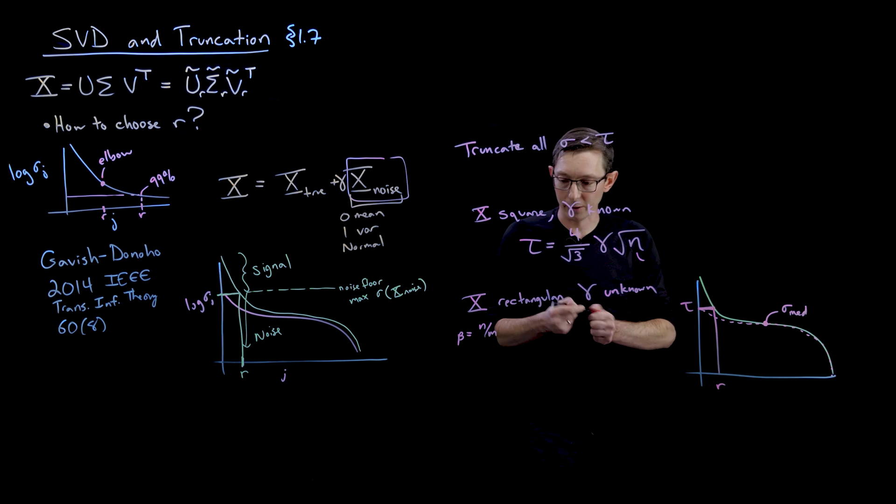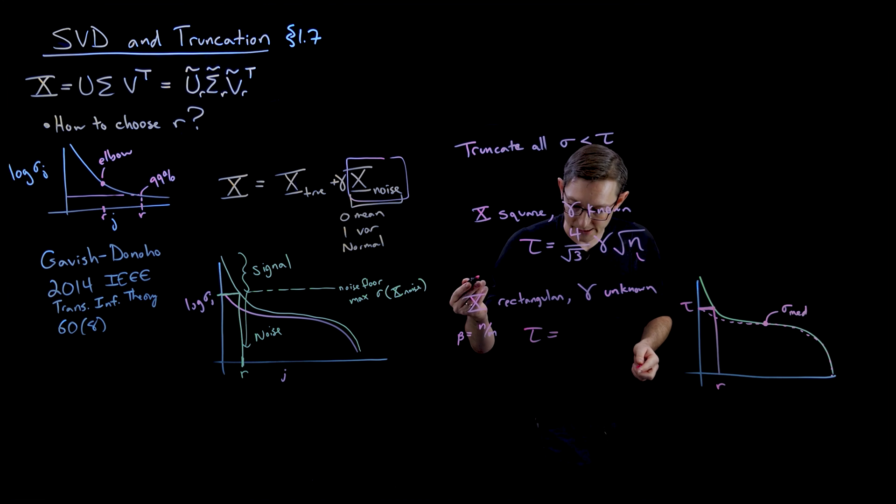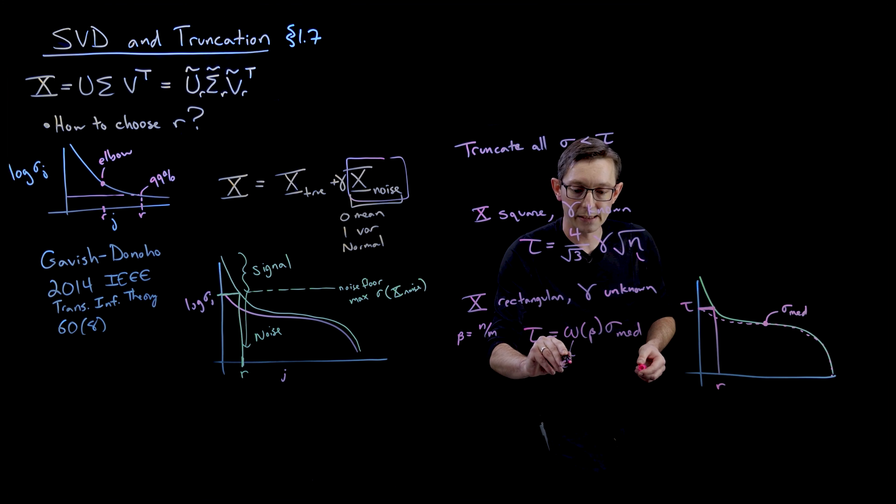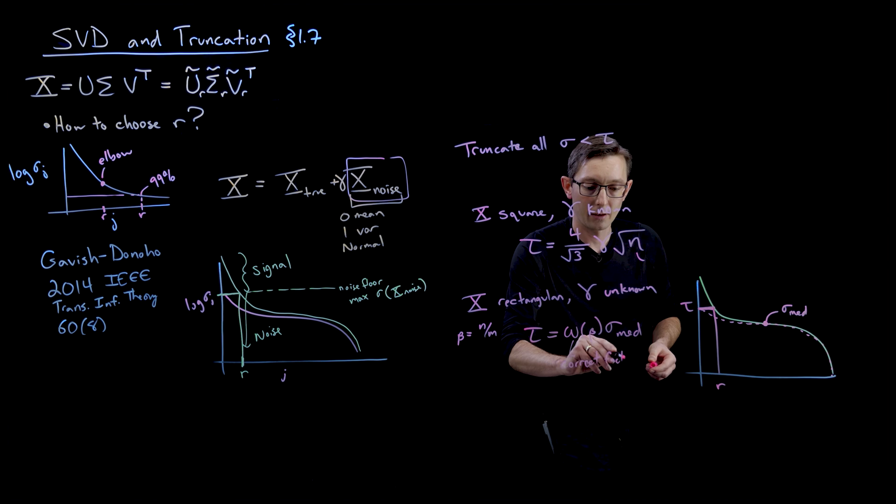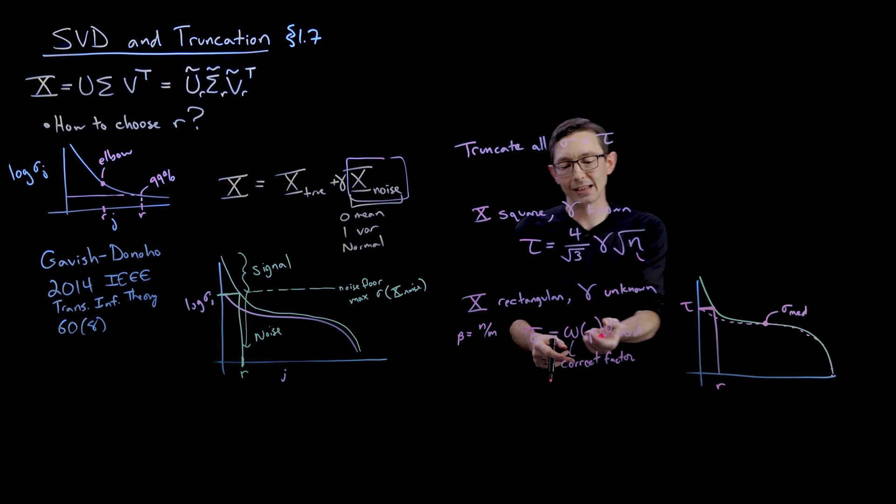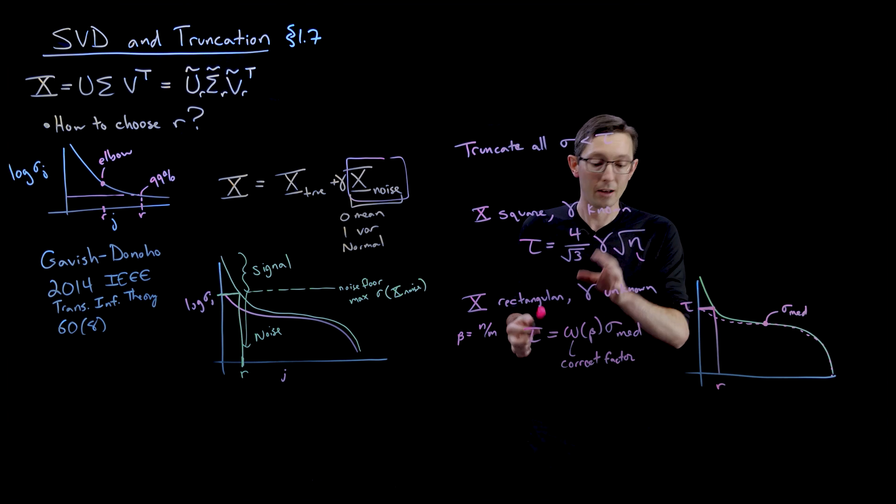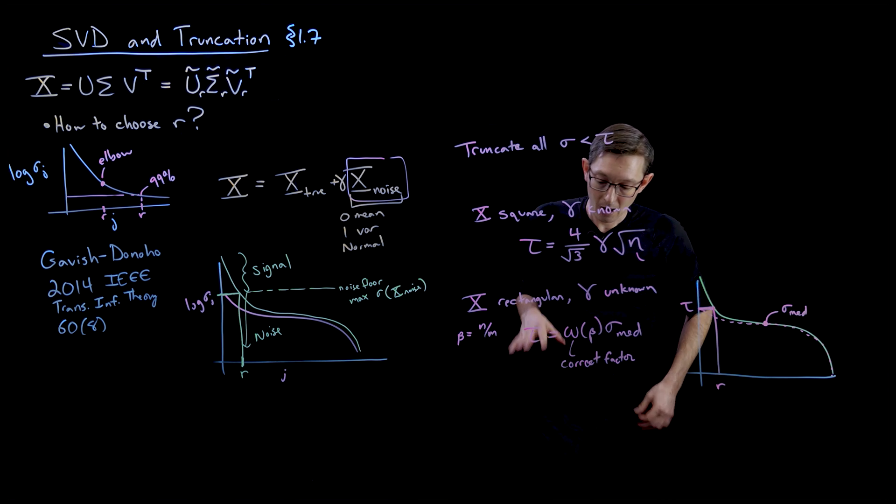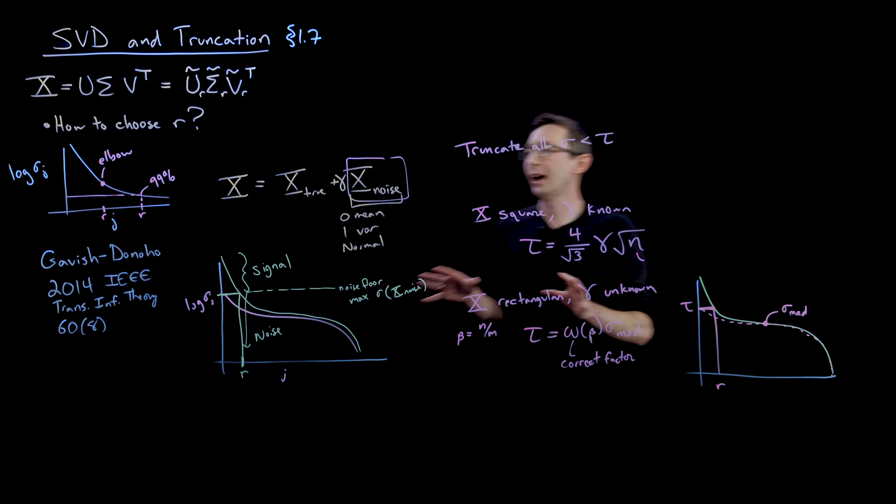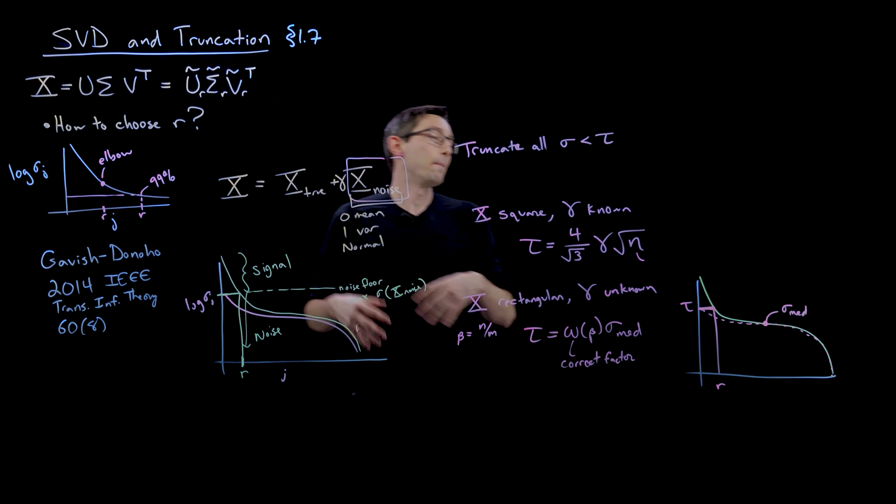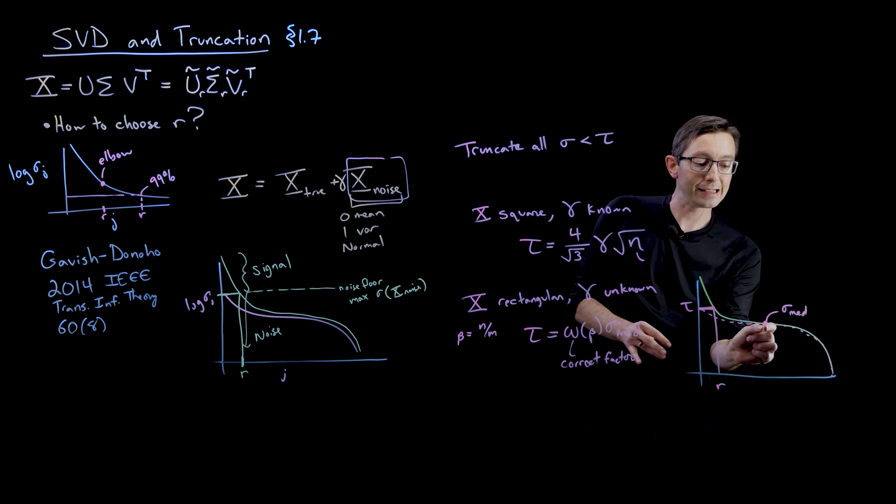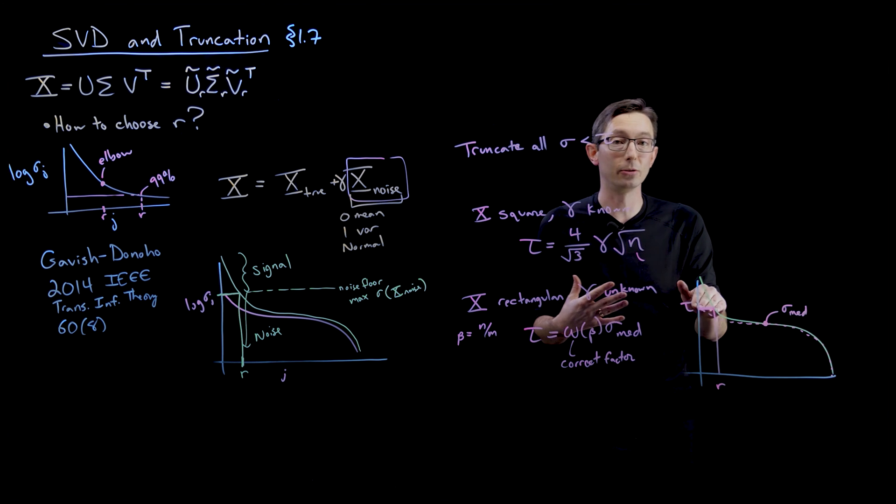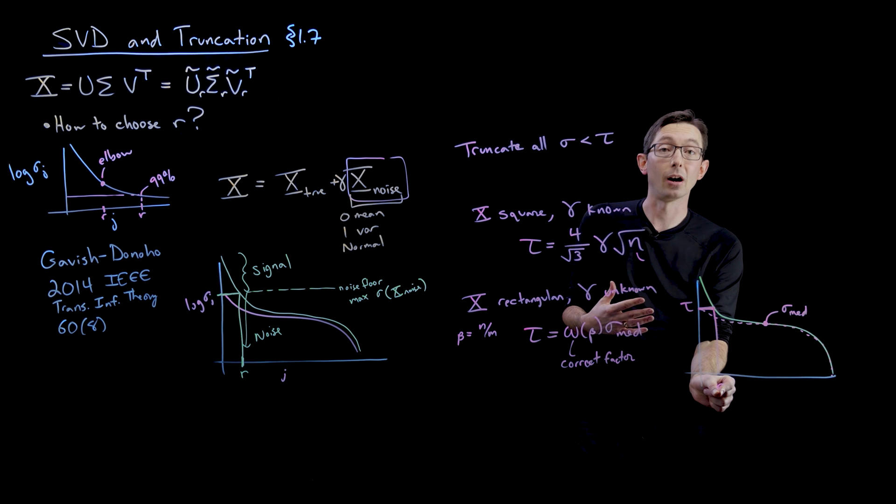And the formula is a little bit involved. I'm not going to reproduce the whole thing. But here we have tau equals some omega of beta times the median singular value, where this is essentially a correction factor for the aspect ratio of the matrix. And this is a pretty involved expression. It's a little bit nasty to write down. It's in their paper and they have a nice MATLAB code to actually compute this. But what you need to know is that if you have data that has structure and noise, even if you don't know how much noise is added, you can estimate it from that median singular value. And then you can infer what this optimal tau is where you would threshold singular values below that tau to give you your optimal rank R.